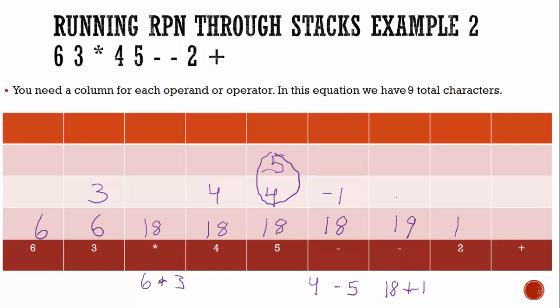Then I have an operand here, my previous stack just had 19, I'm pushing the two to my stack, I have to add these two numbers, I'm going to pop them from my stack, two plus, and then my 19, 19 plus two is 21, and 21 is your answer.